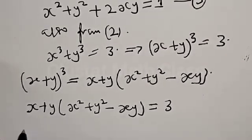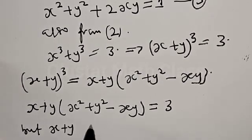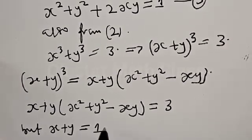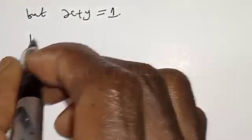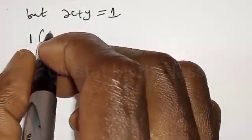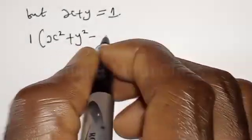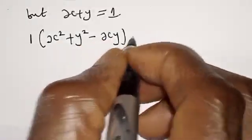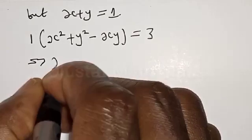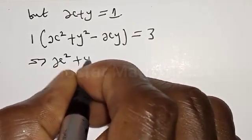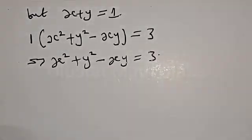But recall that s plus y from equation 1 is equal to 1. Therefore, this becomes 1 times s squared plus y squared minus sy equal to 3, which implies that s squared plus y squared minus sy equal to 3.